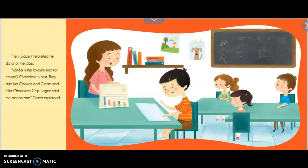Then, Grace interpreted her data for the class. Vanilla is the favorite kind, of course. Chocolate is next. They also like cookies and cream and mint chocolate chip. Logan said the bacon one, Grace explained.